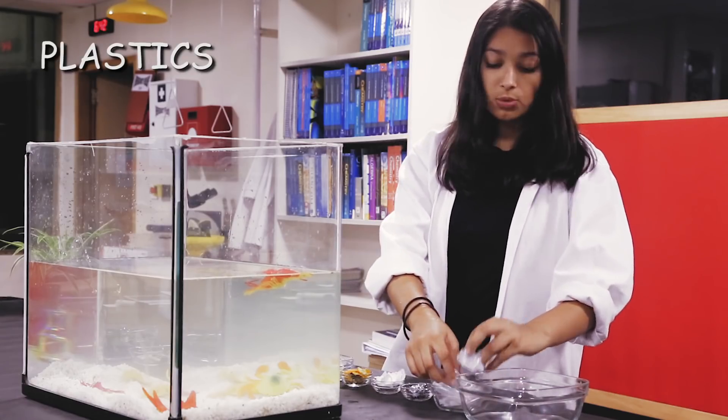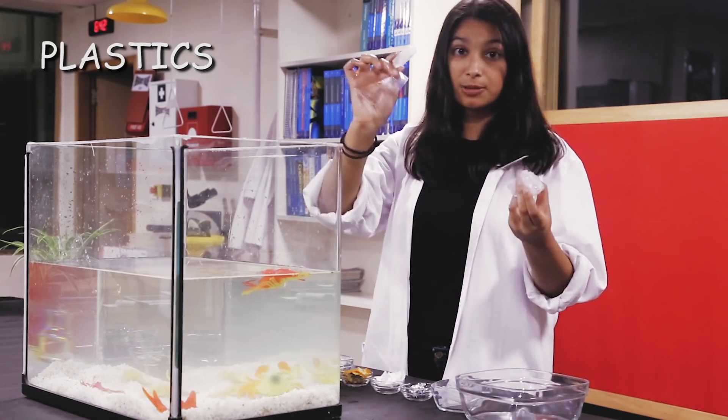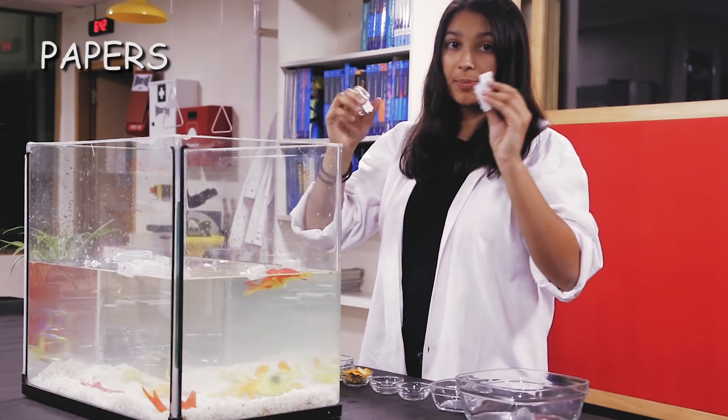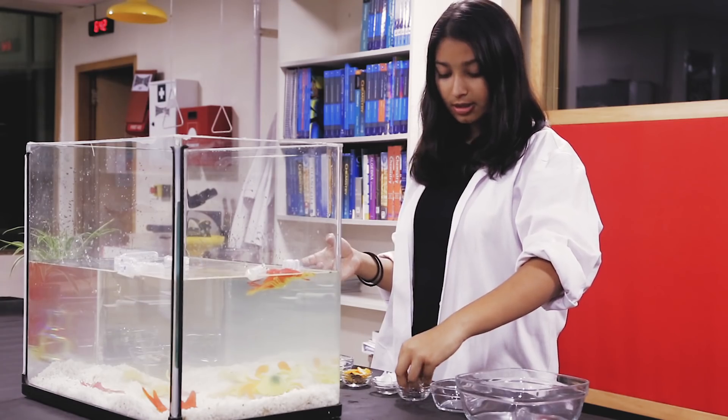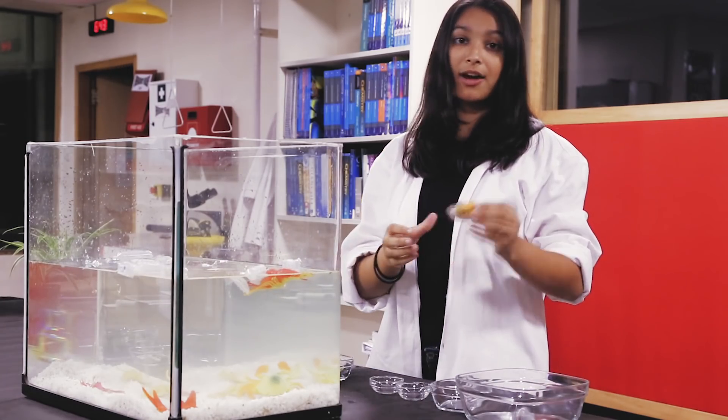First, I'm going to start with plastics. We put in a bunch of plastic sheets, plastic bottles. Lastly, there's the papers. Next, I'm going to put in some oil. Next, we have food waste.